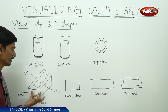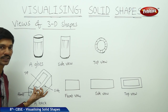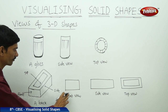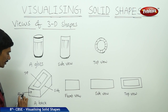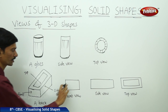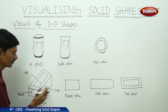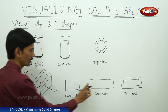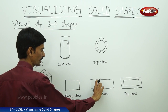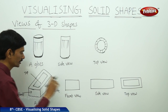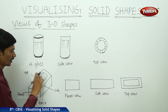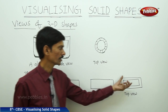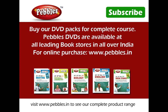If you consider a brick, it looks like a cuboid. If you observe the front view of the brick, it is a rectangular shape. The side view of the brick is also a rectangular shape. And if you see the top view of the brick, it looks like a rectangular path.